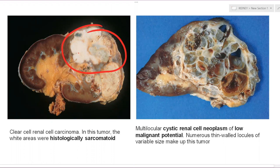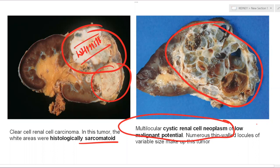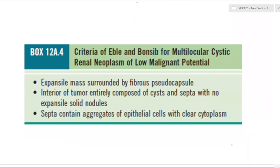Around 5% of clear cell carcinomas can have whitish fleshy sarcomatoid-appearing areas — it looks sarcomatoid but is not a sarcoma. In children, if such a kidney presents, a diagnosis of cystic nephroma can be made. In adults, the entire tumor mass can be converted into cystic masses separated by thin-walled locules with no solid areas — this is the multi-cystic renal neoplasm of low malignant potential, a low-grade variant of clear cell carcinoma lined by clear-cell-type cells.